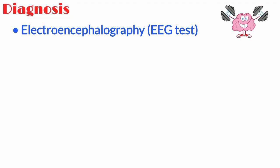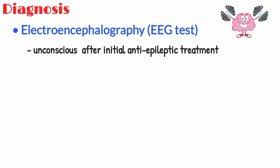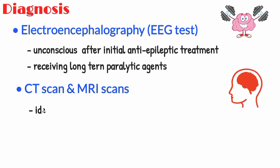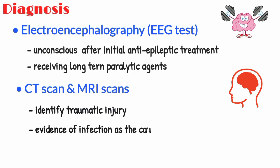Electroencephalography or EEG testing is required to identify and diagnose status epilepticus in comatose patients. EEG monitoring should be used in patients who remain unconscious after initial anti-epileptic treatment and those receiving long-term paralytic agents. CT scans and MRI scans are useful to identify traumatic injury or any evidence of infection as the cause of status epilepticus.